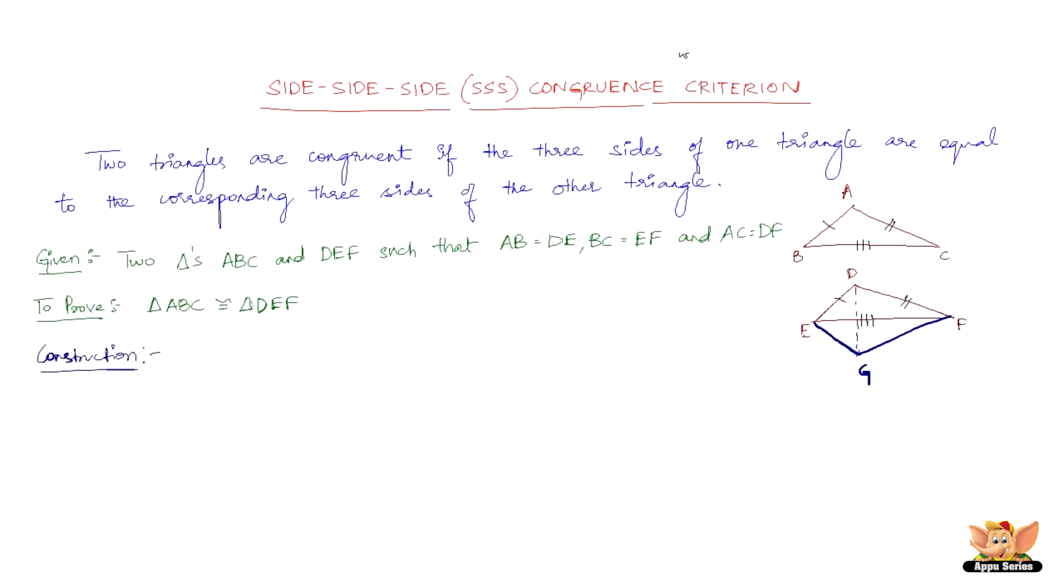Now let us get to the proof. In triangles ABC and GEF we have BC equals EF, which is given. And then we have AB equals GE, which comes by construction. And also we have angle ABC equals angle FEG. Again, that is by construction.